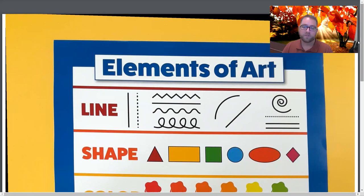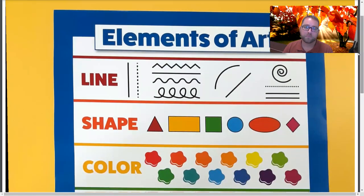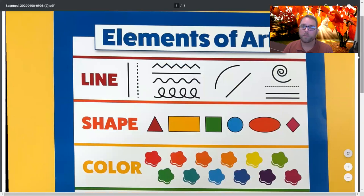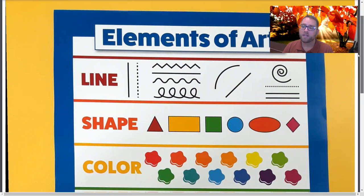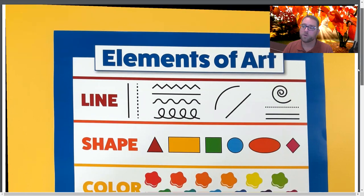So the first thing we're going to do is review what the elements of art are, and you'll see them right on your screen. The elements of art are the things that make up all kinds of art. Every kind of art that you see has these elements within them. We use these things to create art — that's why we need to know what they are.